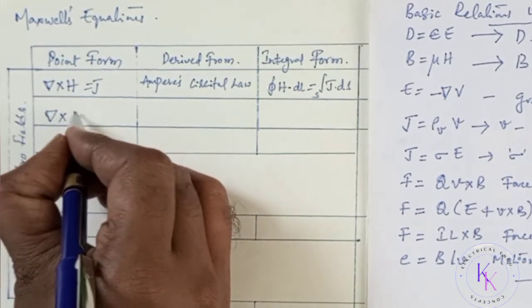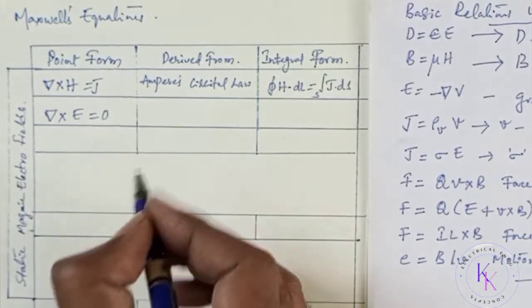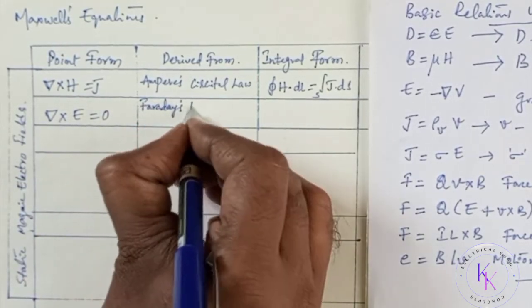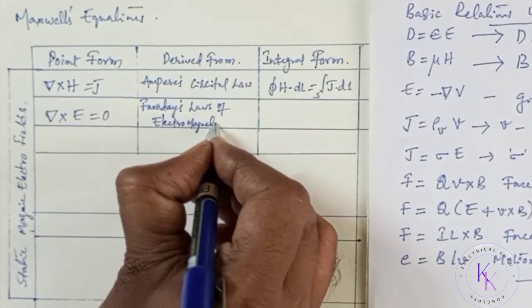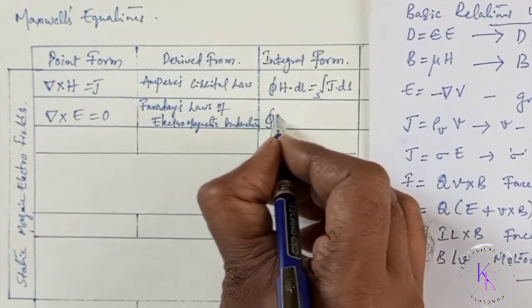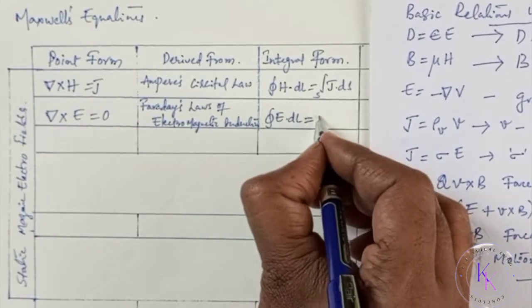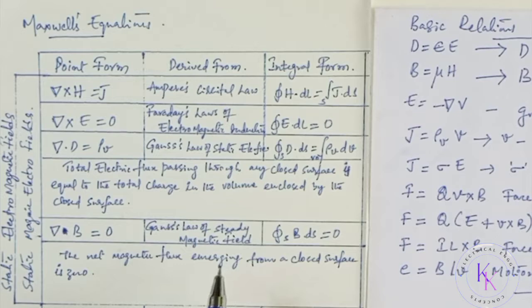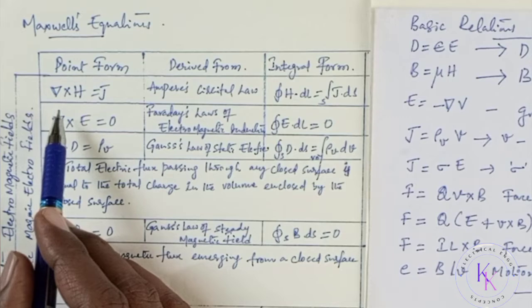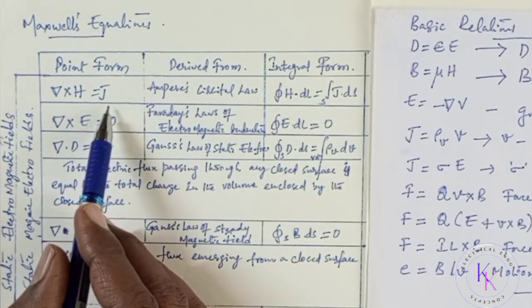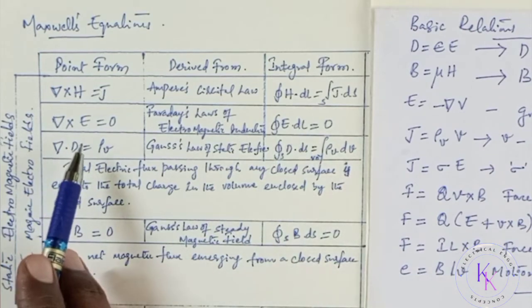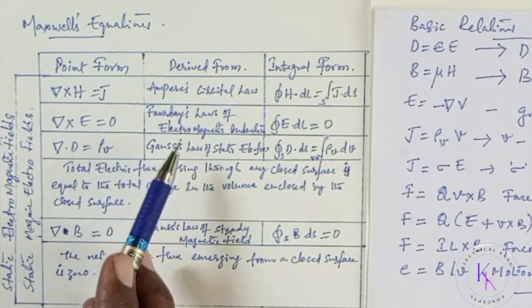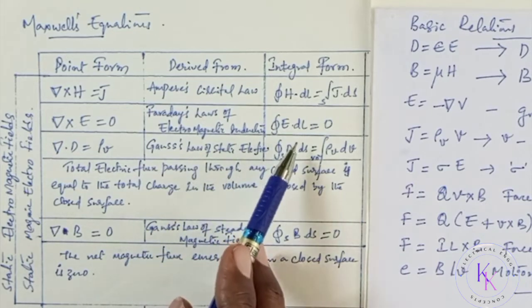Del dot D equals rho_V. These are the four Maxwell's equations we studied in static electromagnetic fields. The first is del cross H equals J, derived from Ampere's circuital law, with its corresponding integral form. Similarly, del cross E equals 0, derived from Faraday's law of electromagnetic induction, with its integral form.